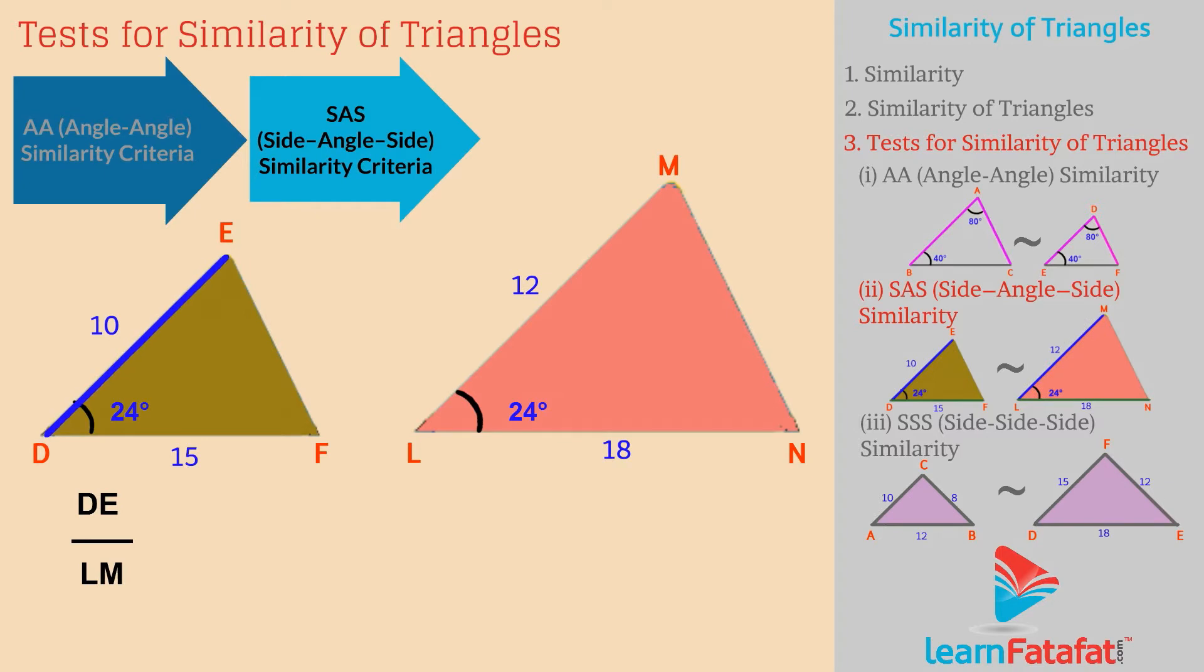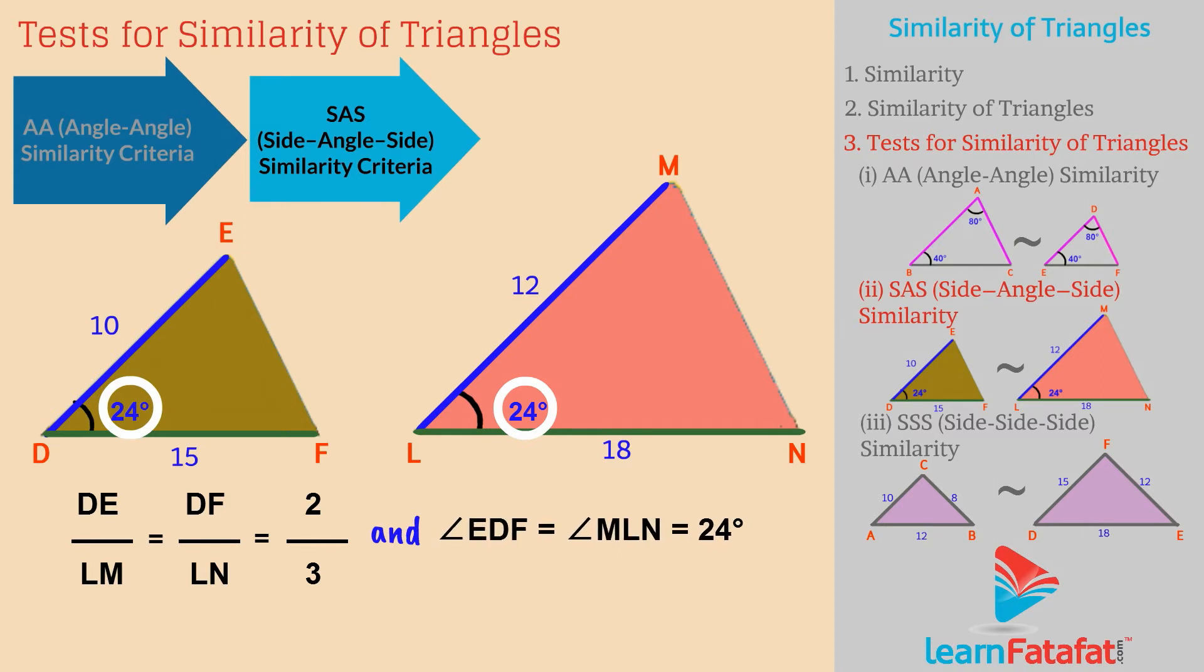Here, DE divided by LM is equal to DF divided by LN, which is equal to 2 divided by 3. And the angles included by the two sides in each triangle are equal. That is, angle EDF is equal to angle MLN, which is equal to 24 degrees. Then, the two triangles are similar. That is, triangle DEF is similar to triangle LMN.